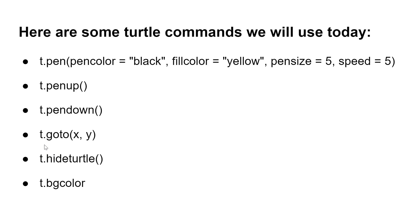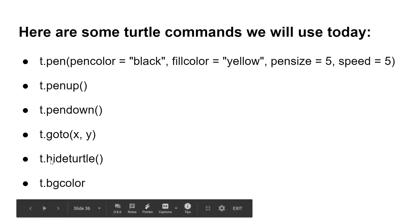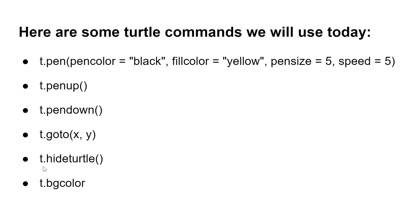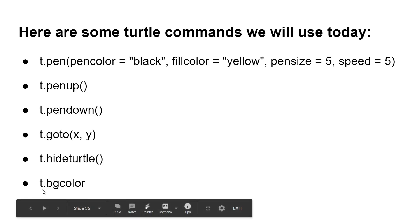Then t.goto(x, y) makes the turtle go to a coordinate on the screen — I'm going to explain the coordinate system a bit later in this video, and I also explain it in my Scratch videos, so please check those out. Then there's t.hideturtle, which hides the turtle on screen — useful when you want it to draw something without showing the turtle. And then there's t.bgcolor, which sets the background colour.